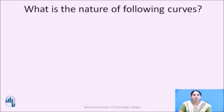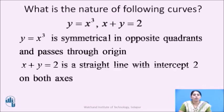Now pause the video for a minute and give the answer to this question: What is the nature of the following curves? y equals x cubed and x plus y equals 2. I hope you all have written the solution. In the previous unit on curve tracing, we have seen how to trace a curve. Now here, y equals x cubed is symmetrical in opposite coordinates and passing through the origin, and the line x plus y equals 2 is a straight line with intercept 2 on both axes.